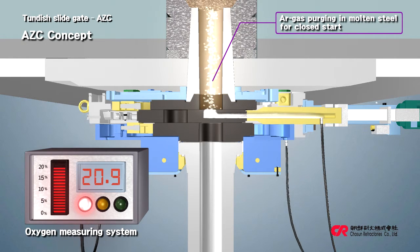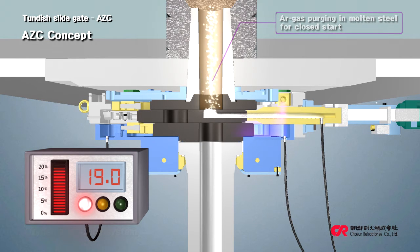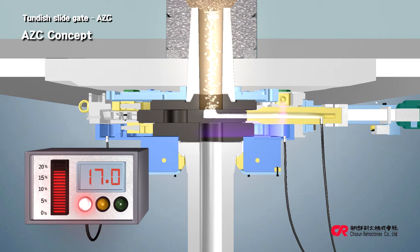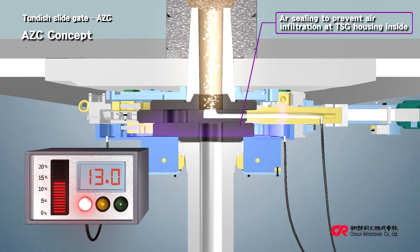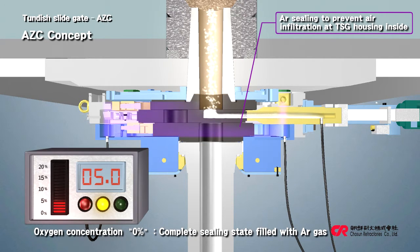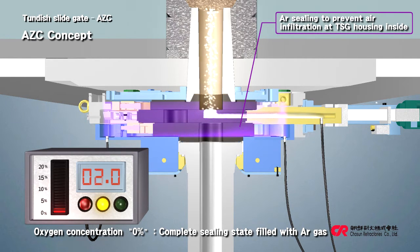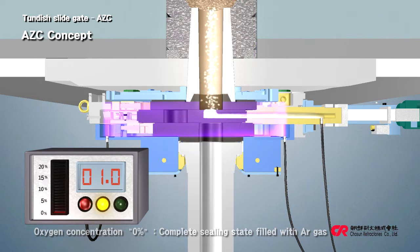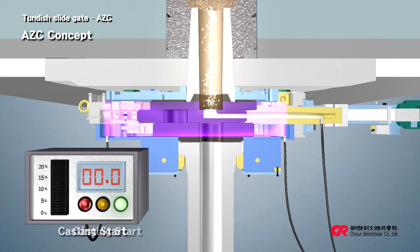You can check the internal state of the AZC by installing an oxygen measuring system in the vent hole. The AZC has three airtight designed housings and the gaps between them are sealed with ceramic material, helping to block leakage from the outside. The rod connected to the hydraulic cylinder is also sealed in place with ceramic material.